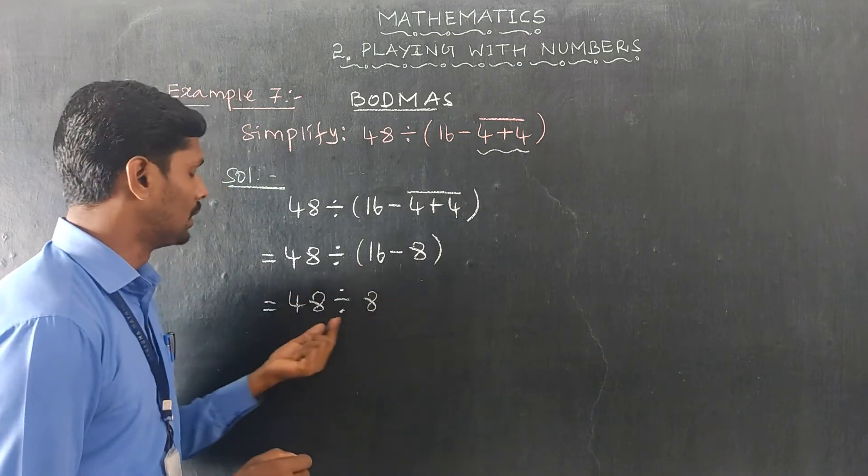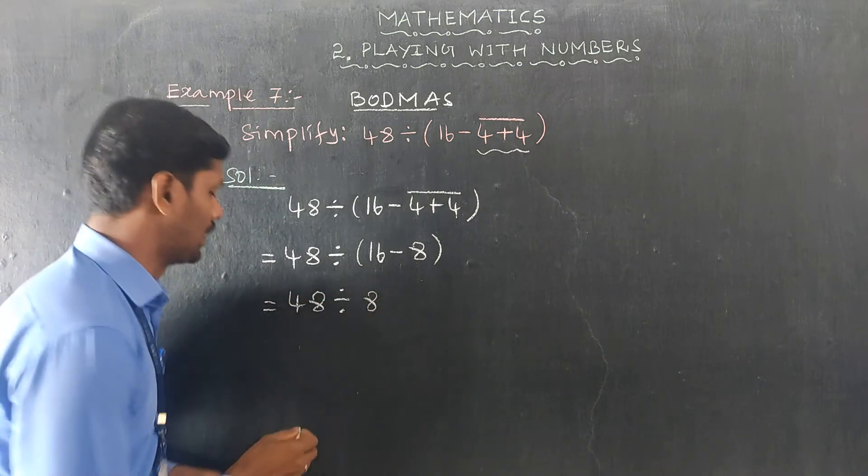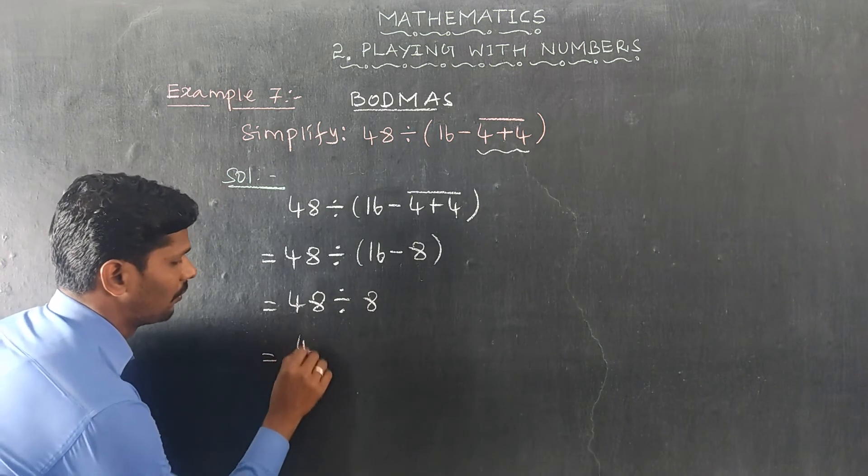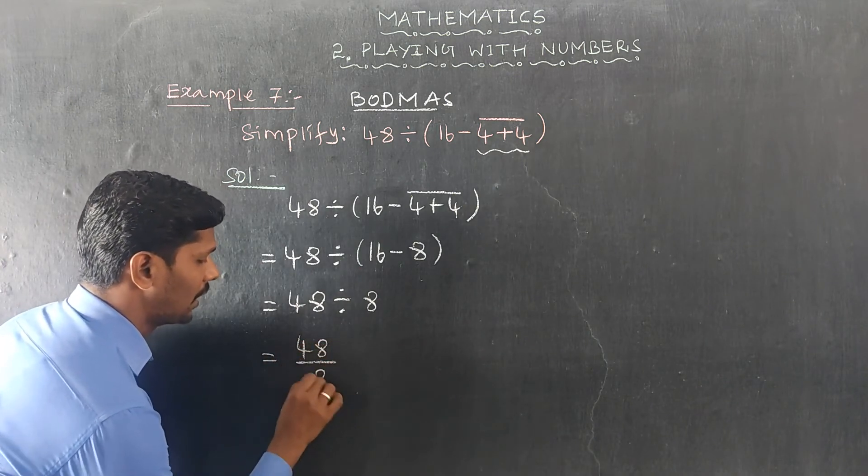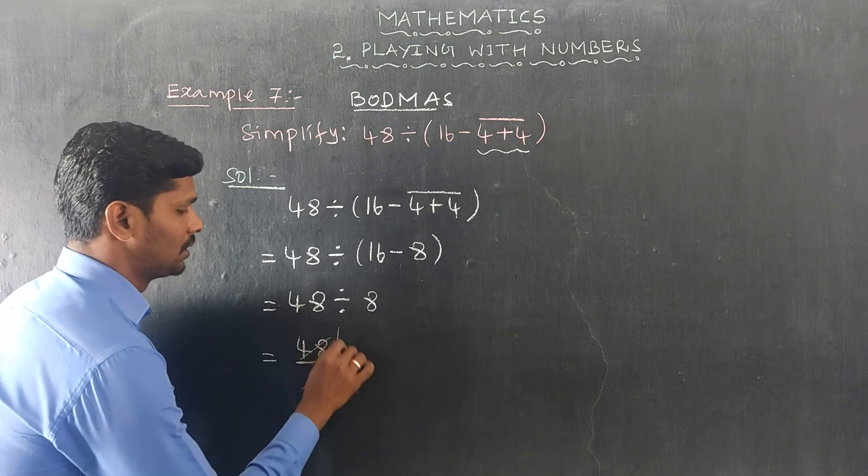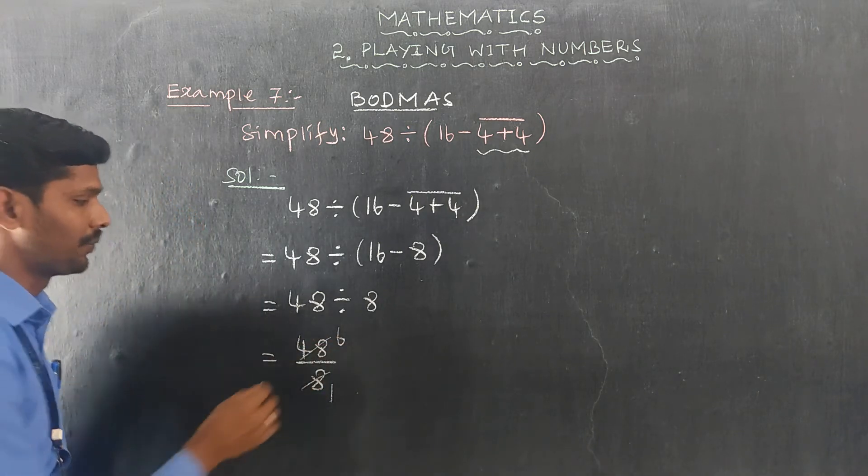16 minus 8 equals 8. Now the bracket can be removed: 48 divided by 8. 48 divided by 8, 1 times 8 is 8, 6 times 8 is 48, that's 6.